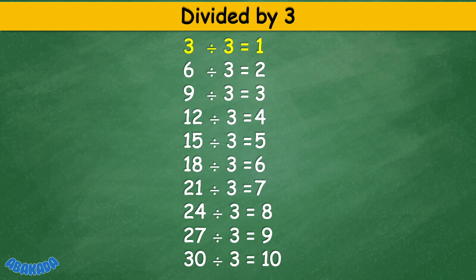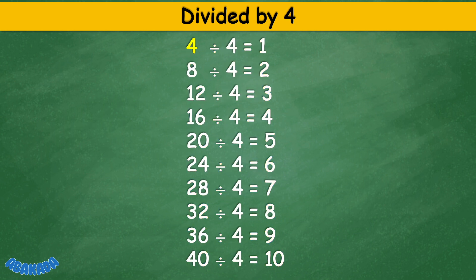Divided by 3: 3 divided by 3 equals 1, 6 divided by 3 equals 2, 9 divided by 3 equals 3, 12 divided by 3 equals 4, 15 divided by 3 equals 5, 18 divided by 3 equals 6, 21 divided by 3 equals 7, 24 divided by 3 equals 8, 27 divided by 3 equals 9, 30 divided by 3 equals 10.